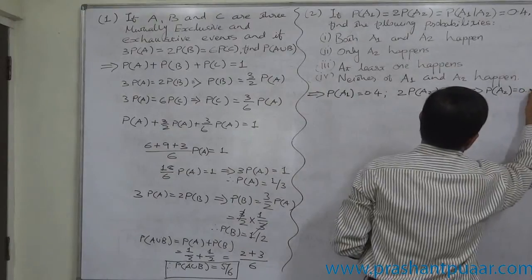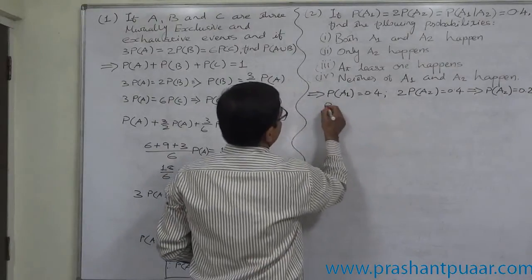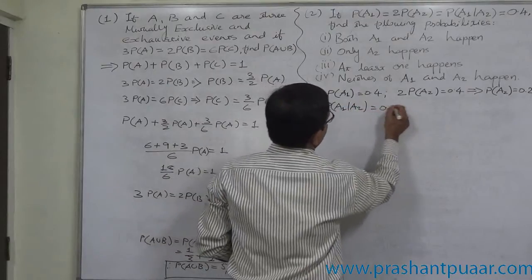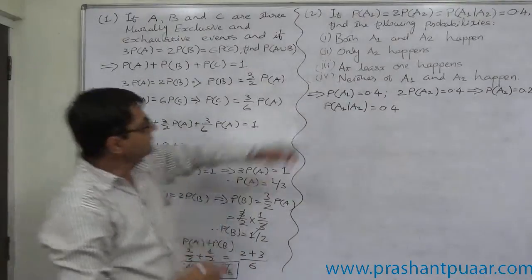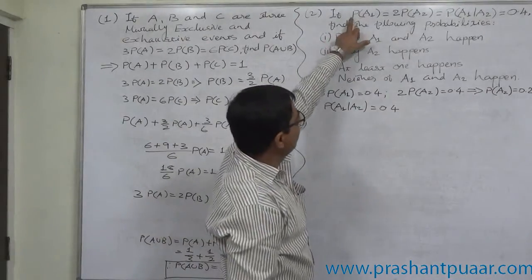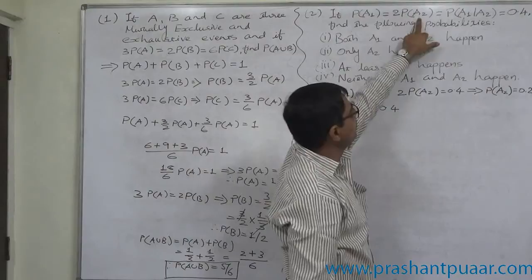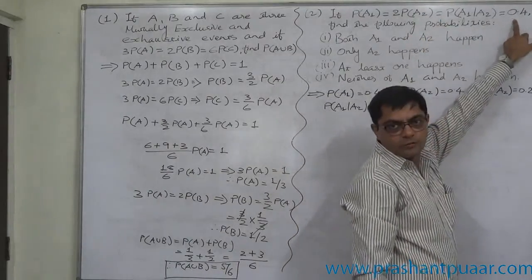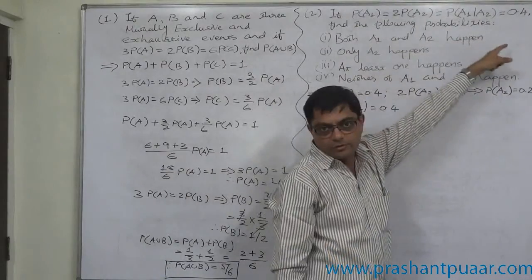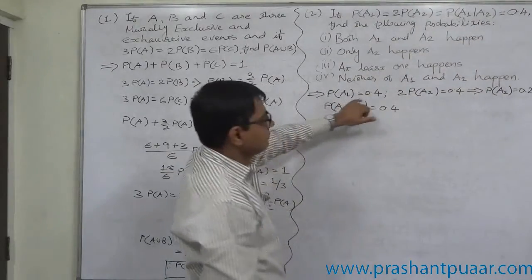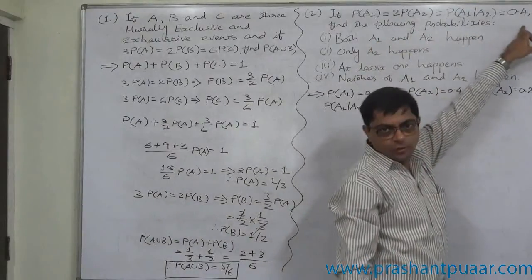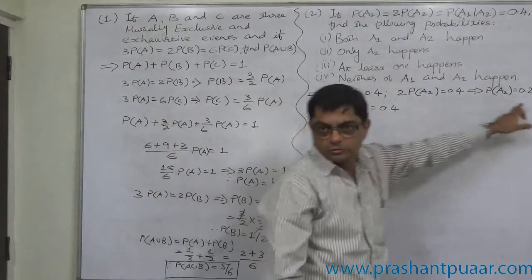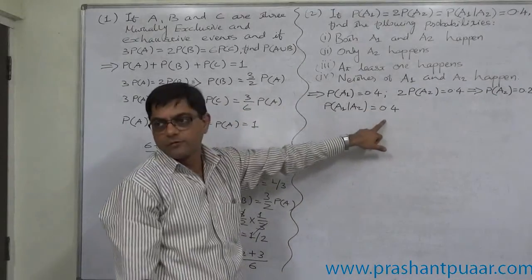And P of A1 given A2 is also 0.4. This is the simplification of the information: P of A1 equals 2P of A2 equals P of A1 given A2 equals 0.4, so all these three are 0.4. So P of A1 is 0.4, 2P of A2 equals 0.4, so P of A2 is 0.4 divided by 2, so 0.2, and P of A1 given A2 is 0.4.